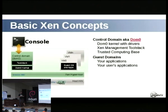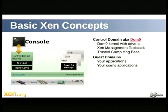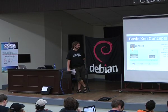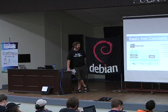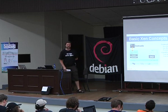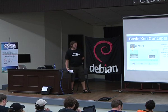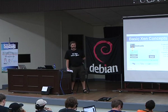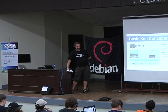Some basic Xen concepts. Xen is essentially what we call a Type 1 hypervisor — it runs directly on the hardware, as opposed to a Type 2 hypervisor which would run in a host operating system. There's a little twist with Xen: rather than having all the device drivers in the hypervisor itself, we have one or more privileged domains which are able to see the hardware. In a normal Xen system, you have one such privileged domain called Domain 0 or DOM0, which is the first domain loaded on boot.